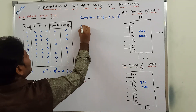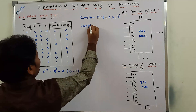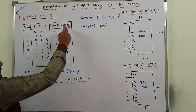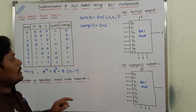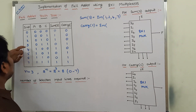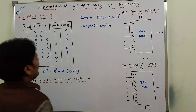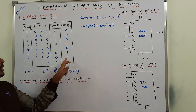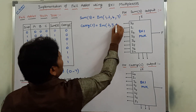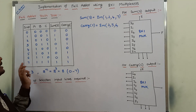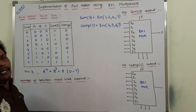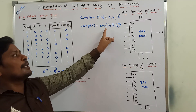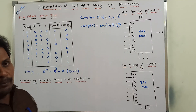In the same way, we have to write carry also. Carry C equals sigma m of — observe the carry column where the 1s are present. The corresponding min term numbers are: min term 3, min term 5, min term 6, and min term 7. So carry can be represented as Σm(3, 5, 6, 7). Now we have to implement this full adder by using 8 by 1 multiplexer.